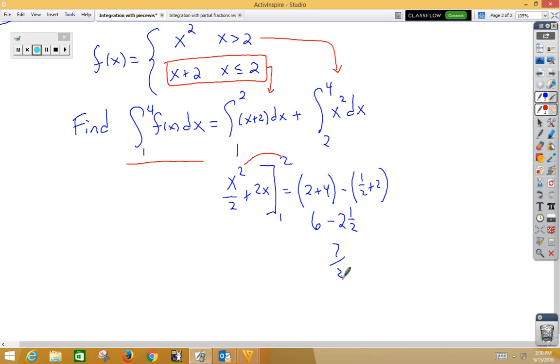For our second one, we integrate and get x cubed over 3 from 2 to 4. Plug in, that gives us 64 thirds for the top, minus 8 thirds for the bottom, which gives us 56 thirds.